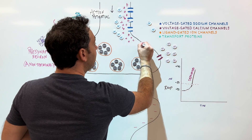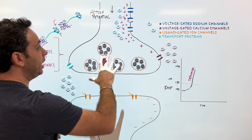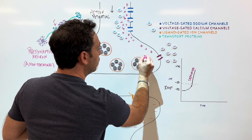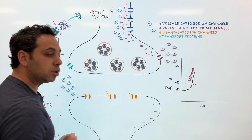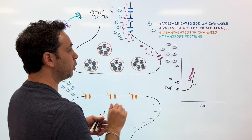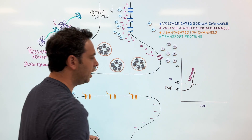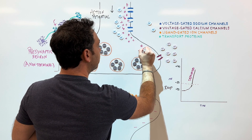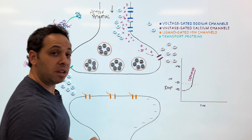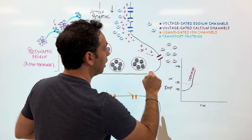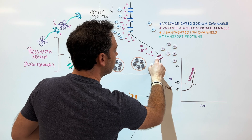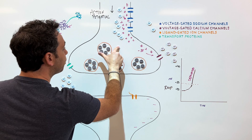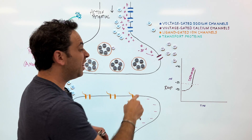Once the wave reaches the axon terminal, having reached that threshold of negative 55, it's going to talk to a different voltage-gated channel — this one is calcium. So we go from sodium to calcium, and this is where the magic happens. We've reached our threshold, this is going to open up our calcium channels, and the calcium is going to enter the cell.